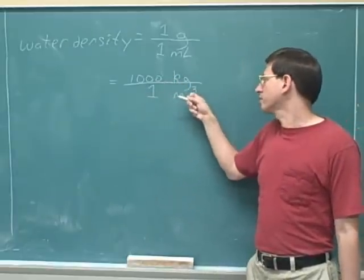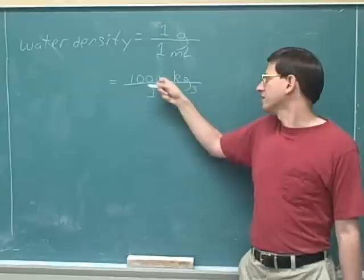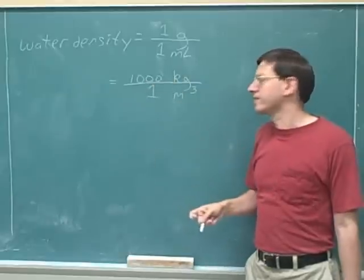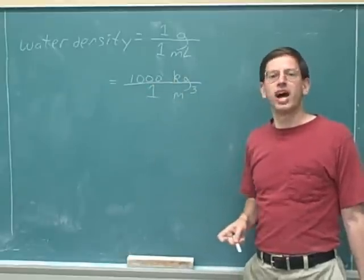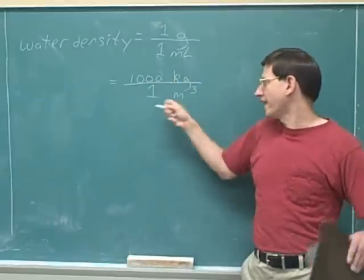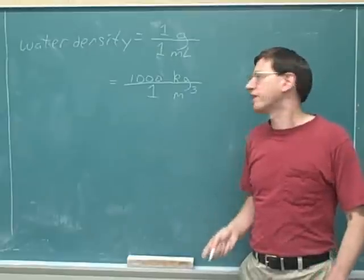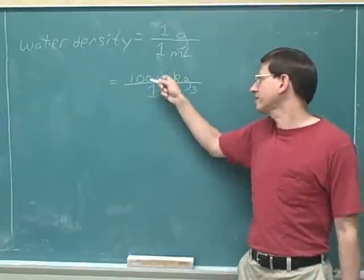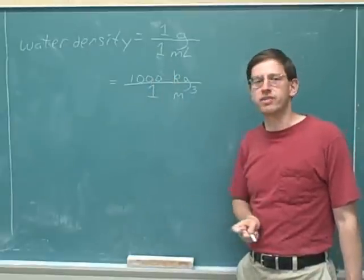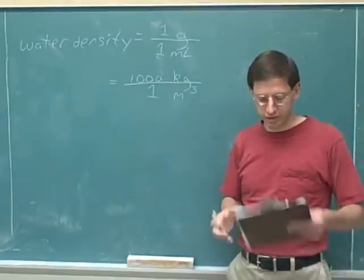If you had one cubic meter of water, it would have a mass of 1,000 kilograms. Obviously I don't have one cubic meter of water with me, but if I did, hypothetically, it would have a mass of 1,000 kilograms.